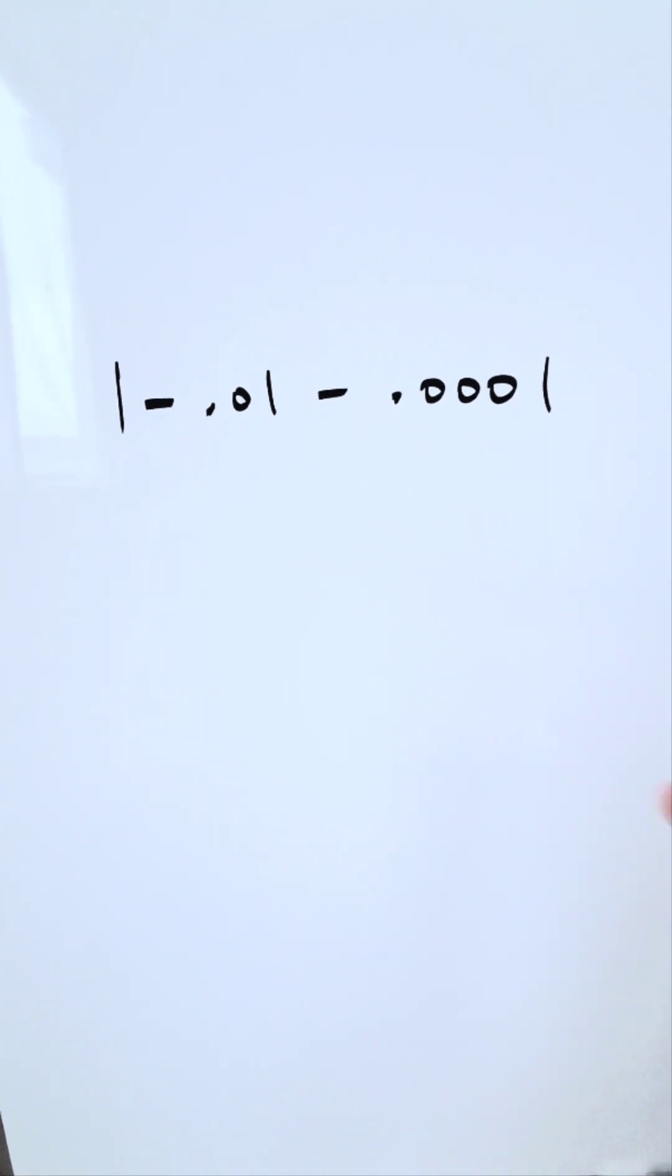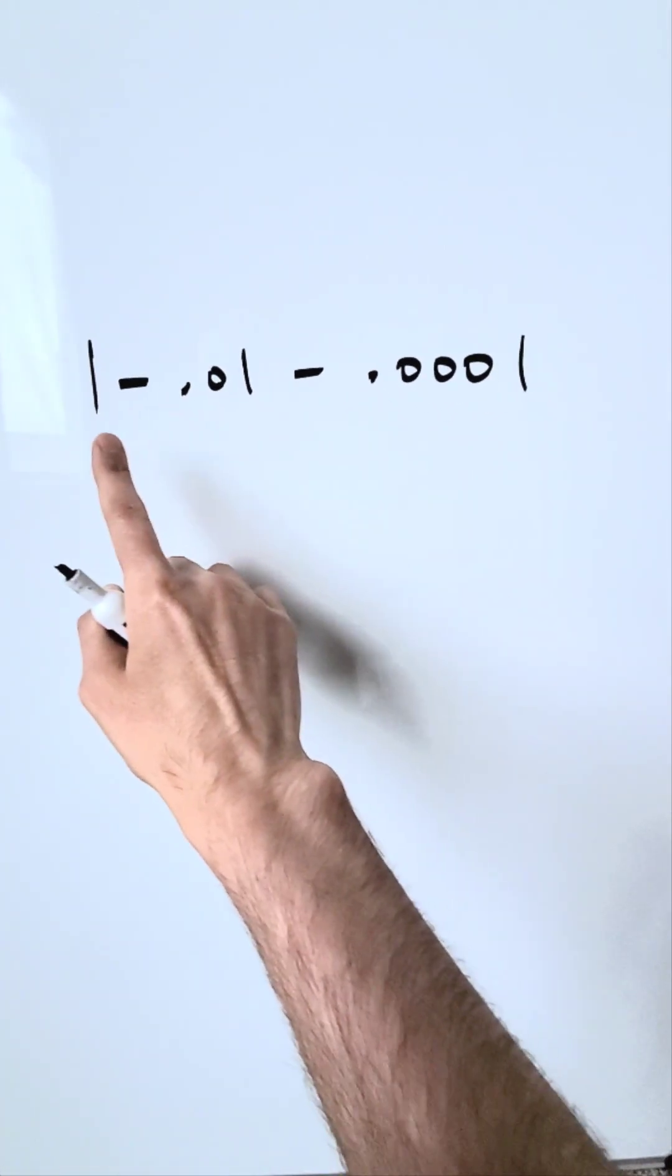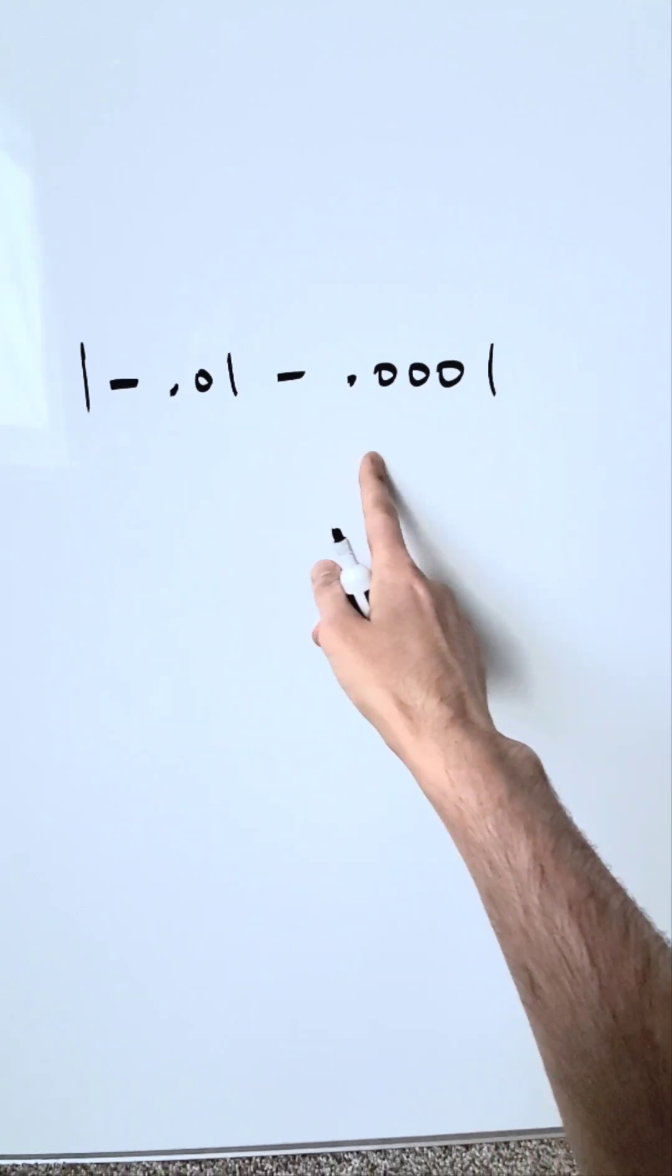Let's look at a math trick, a mathematic trick involving subtractions. 1 minus 0.01 minus 0.0001.